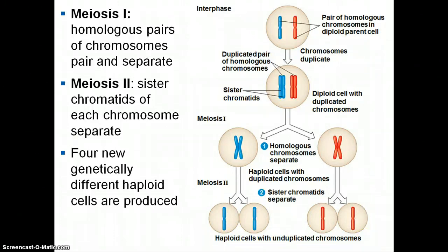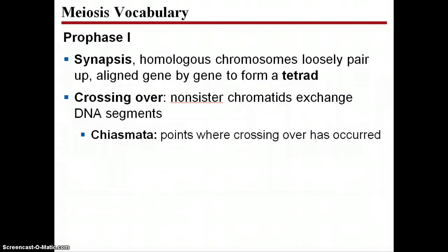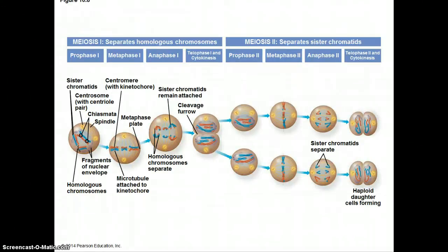Before we start with meiosis, there are a couple of vocabulary terms that are important to know. Number one: synapsis — this is when homologous chromosomes loosely pair up and align, forming a tetrad. Crossing over is when non-sister chromatids exchange segments of DNA at the chiasmata. Let's look at how this plays out — this is the whole process, meiosis one and meiosis two. Remember that meiosis one is when homologous chromosomes are going to separate, and meiosis two is when the sister chromatids are going to separate.